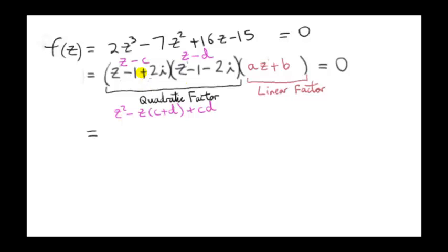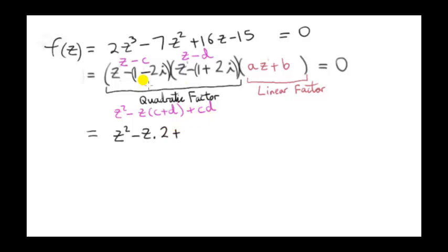c is 1 minus 2i, one of the roots of the polynomial, and d is 1 plus 2i, the other root. So we can quickly write down the result: z squared minus z times the sum of the two roots, that's 1 minus 2i plus 1 plus 2i, which gives us 2, plus the product of the roots. Multiplying 1 minus 2i by 1 plus 2i — a complex number by its conjugate — gives the square of the magnitude, which is 1 squared plus 2 squared equals 5. So the quadratic factor is z squared minus 2z plus 5.